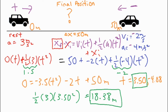I can take that 3.50 seconds and plug it into my red formula or my blue formula — it doesn't matter because they are equivalent. I chose the red one because there are fewer variables and numbers. So I have one-half times three times t squared, and plugging in t equals 3.50, I got 18.38 meters for my final position.